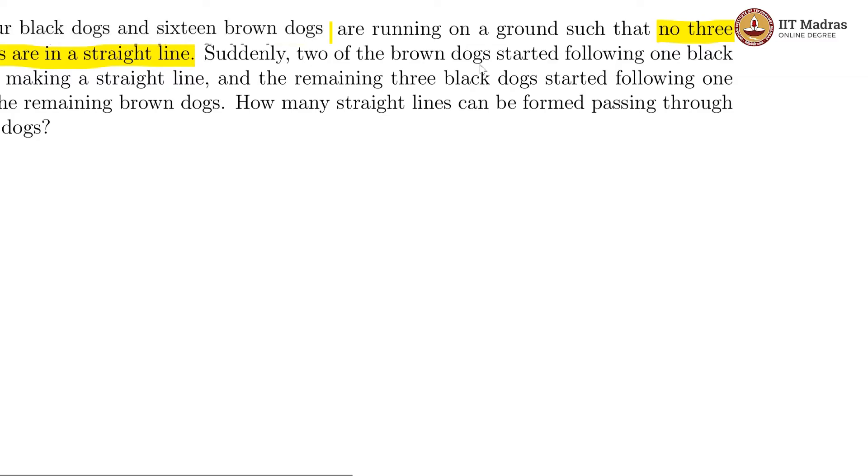Now suddenly, 2 of the brown dogs started following 1 black dog. So we have 2 brown dogs following 1 black dog. So these 3 have now become collinear.